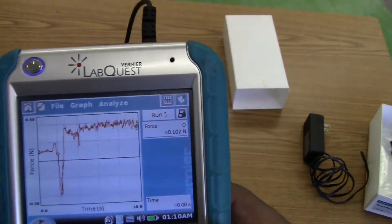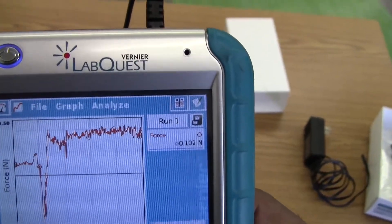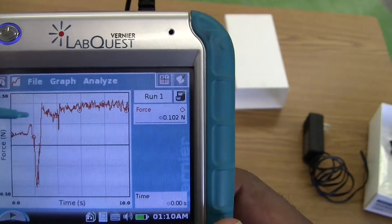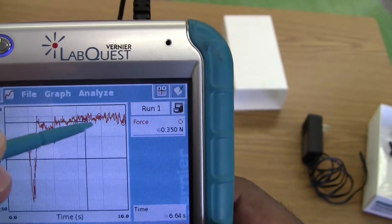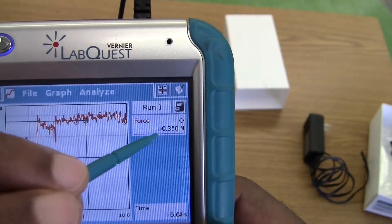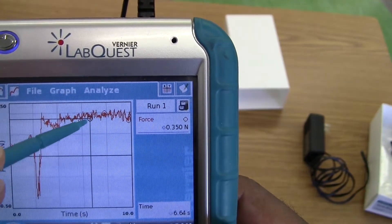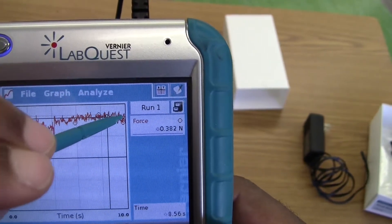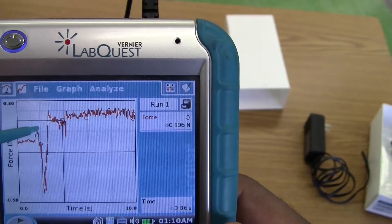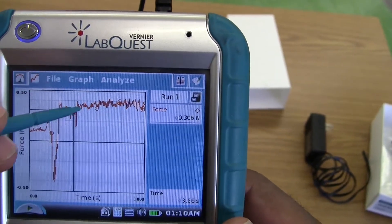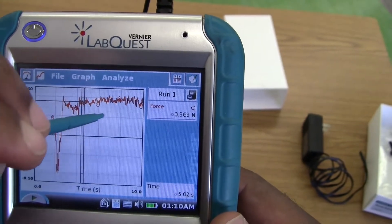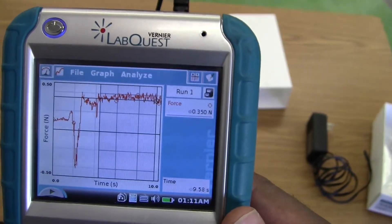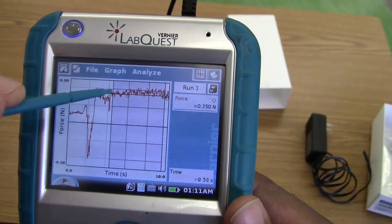Then we have our graph here. If we wanted to pick a specific point, we can just click on the graph itself and you see it's showing the amount of force in newtons. Keep clicking to see it's changing. If we wanted to get the average over time, we can just click on the screen, drag, and let go. You see that this part of the graph has been highlighted.